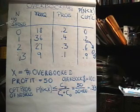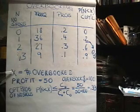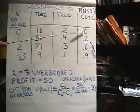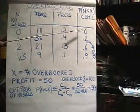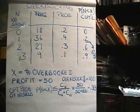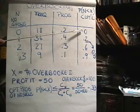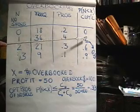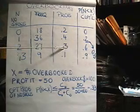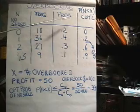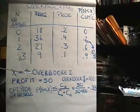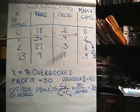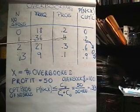Let N be the number of no-shows and X be the number we decide to overbook. We'll calculate the cumulative probability distribution: N less than X means the number of no-shows is less than the number overbooked. The cumulative probabilities are 0.2, then 0.6, then 0.9. These are the probabilities that the number of no-shows is less than what we've overbooked — in that case, we're in trouble. For example, if we overbook by one and have zero no-shows, there's a 20% probability we'll be overbooked by one and have to compensate.